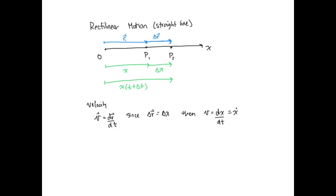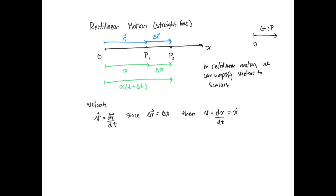In rectilinear motion, because we only have one direction, the direction is assumed in the motion, so we can simplify vectors to scalars. This makes our life a little bit easier. We can still have positive and negative values — in terms of position, if we have the origin here, moving to the right would be a positive value, and moving the other direction would give a negative value.